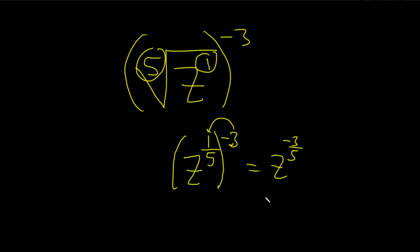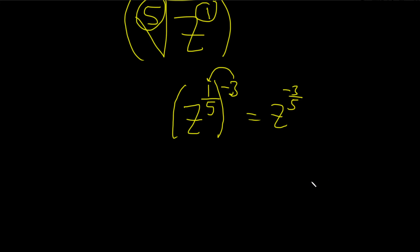We're not done, because the question wanted positive rational exponents. This is really over 1, so what we can do is we can bring this downstairs, and it'll make the exponent positive. We'll have a 1 upstairs. Down the bottom, we'll have z to the 3 over 5.